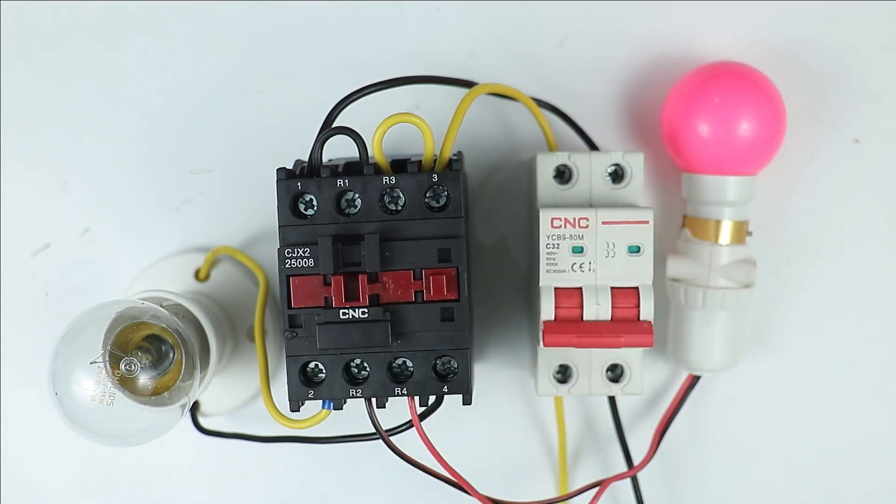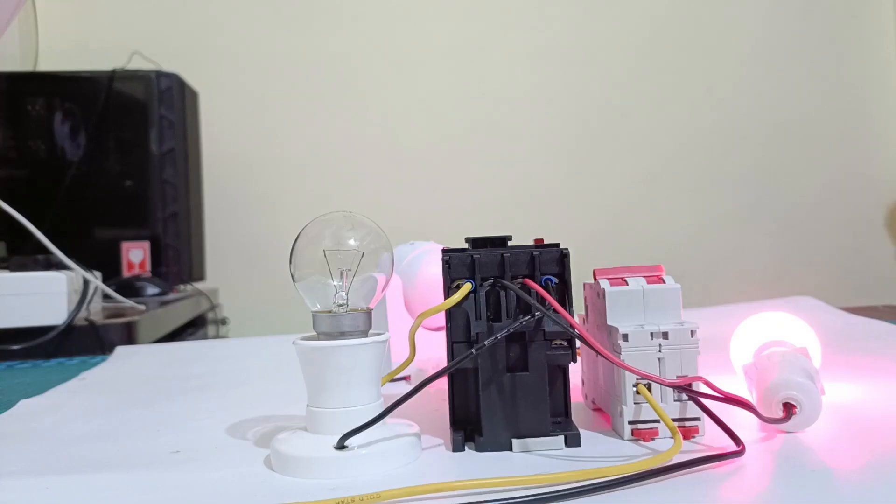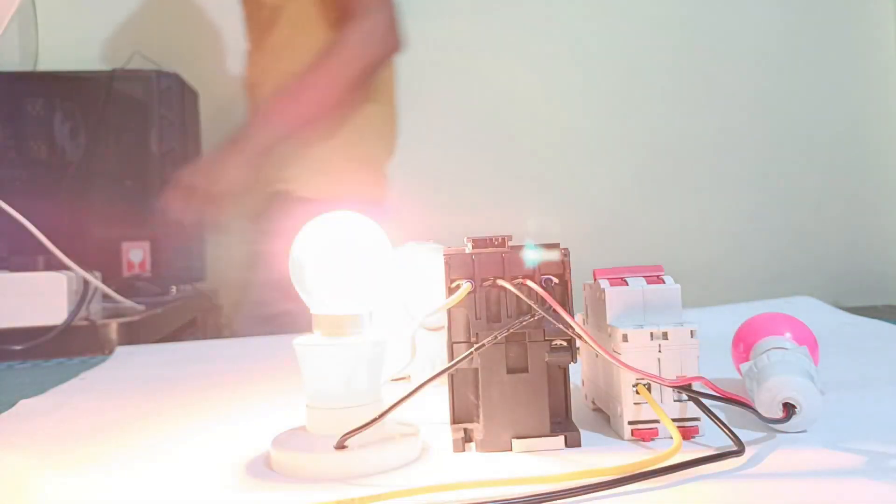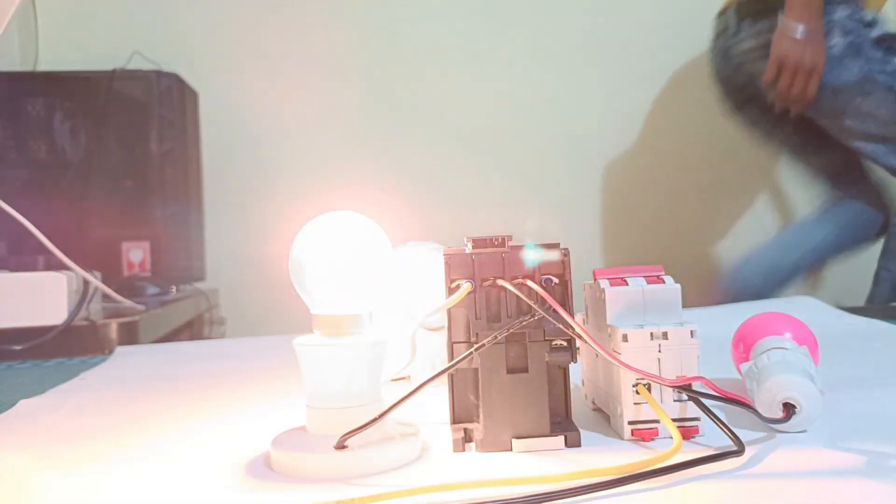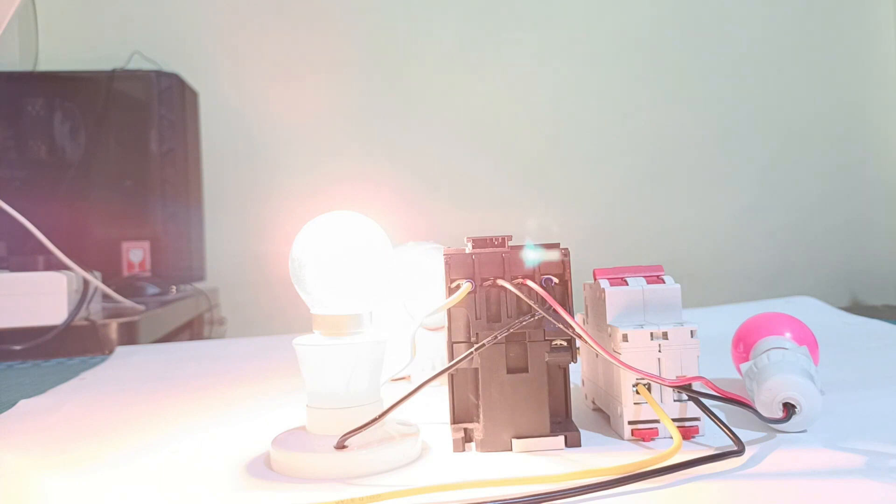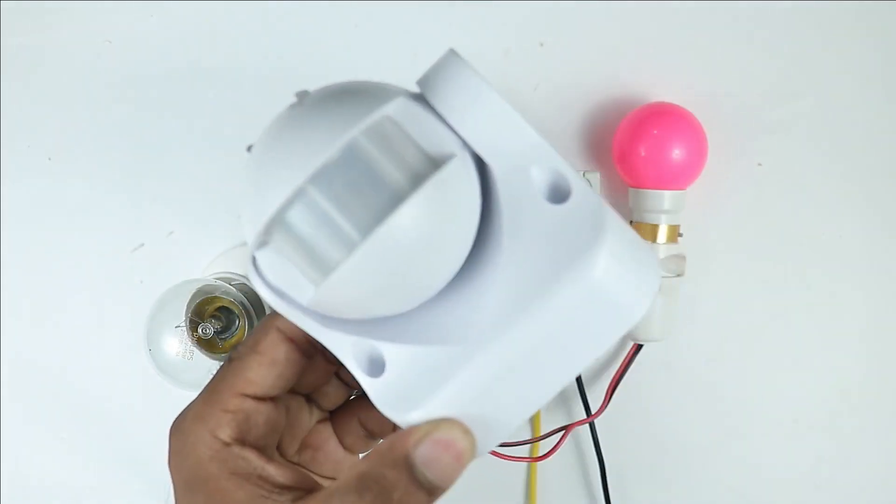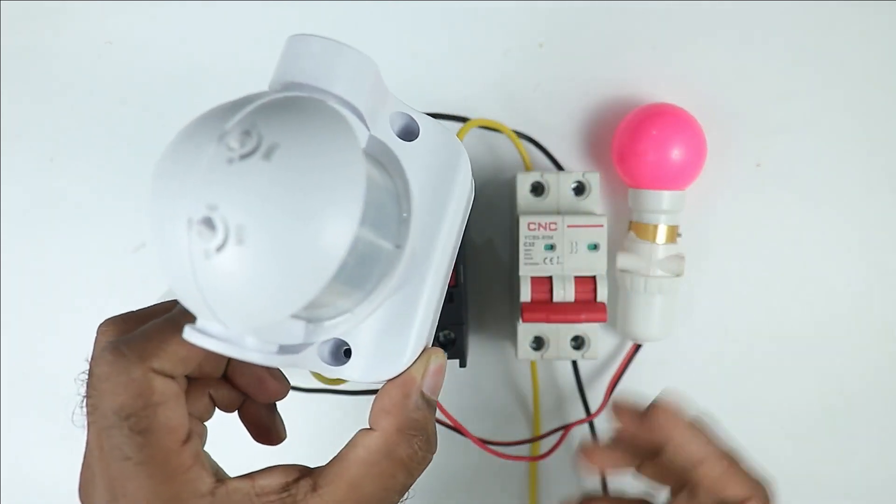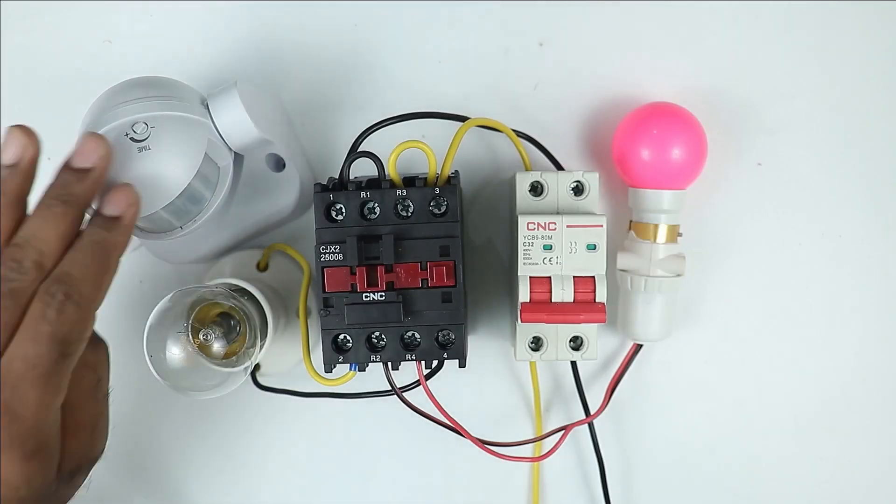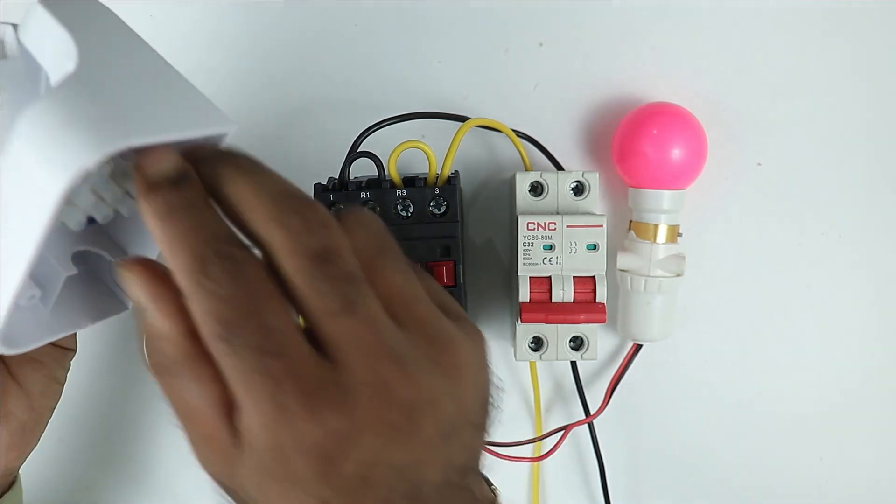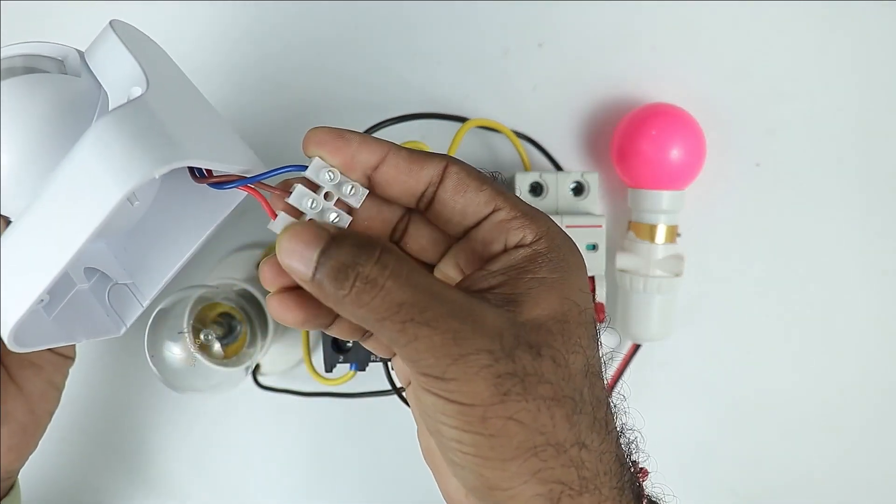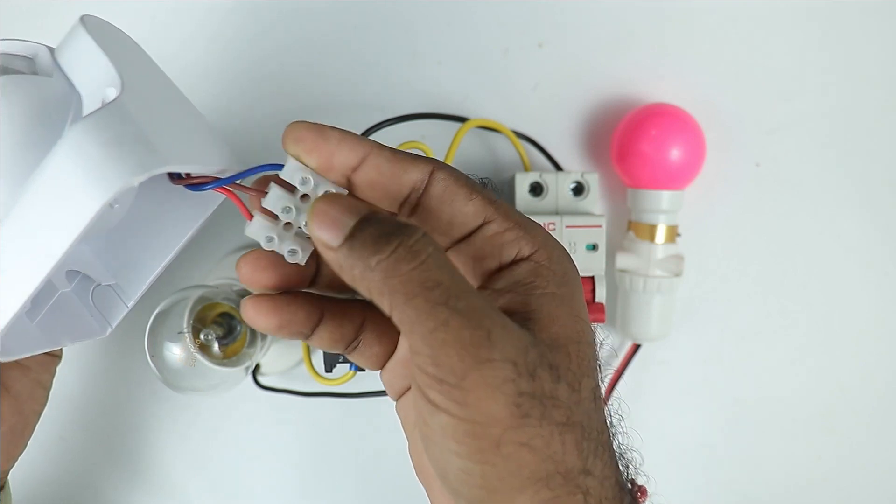As I told you previously, when somebody enters into your room, it means when any motion takes place in your room, then in this condition, this contactor must be turned on. To detect the motion, we need a motion sensor. So here I have a motion sensor with me. For connection of this motion sensor, total 3 wires are provided. How to do the connection of these 3 wires, let's understand.